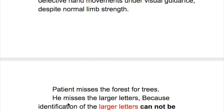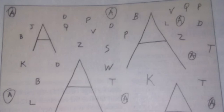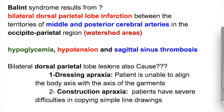Once the hand touches the object, the patient grabs it. The patient misses the forest for the trees — he misses the larger letters because identification of larger letters cannot be confined to the immediate line of gaze. Here, the patient circles only the smaller letter 'A' and does not encircle the bigger letter 'A', because the bigger letters are not in the patient's immediate line of gaze. The Balint syndrome results from bilateral dorsal parietal lobe infarction between the territories of the middle and posterior cerebral arteries — that is, the watershed areas in the occipital-parietal region — and is associated with hypoglycemia, hypotension, and sagittal sinus thrombosis.